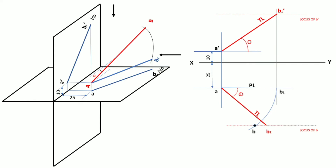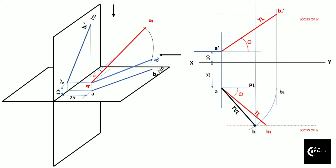Once we get point B, we can directly join A to B by a straight line — this line becomes the top view line. After getting the top view line, we need to get the front view line as well. So we project point B vertically upwards to the locus of point B'. Wherever it meets that locus, that point is B'. Once we get B', we join A' and B' by a straight line — this is the front view line.